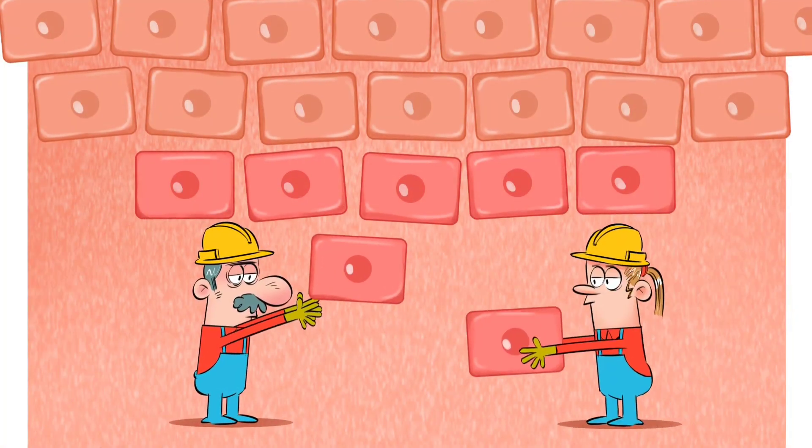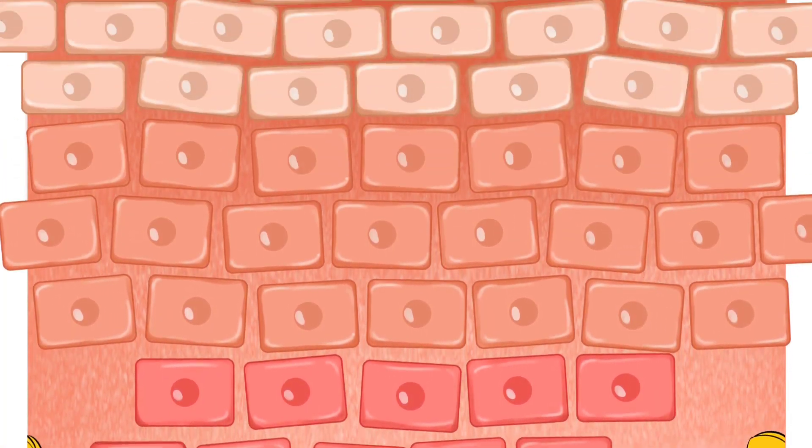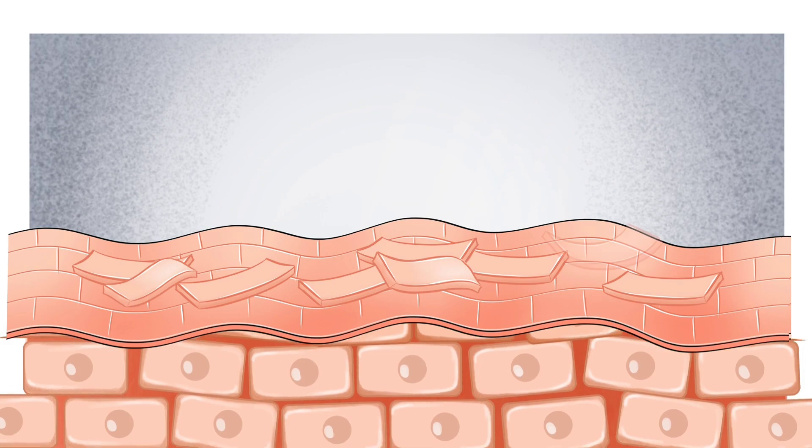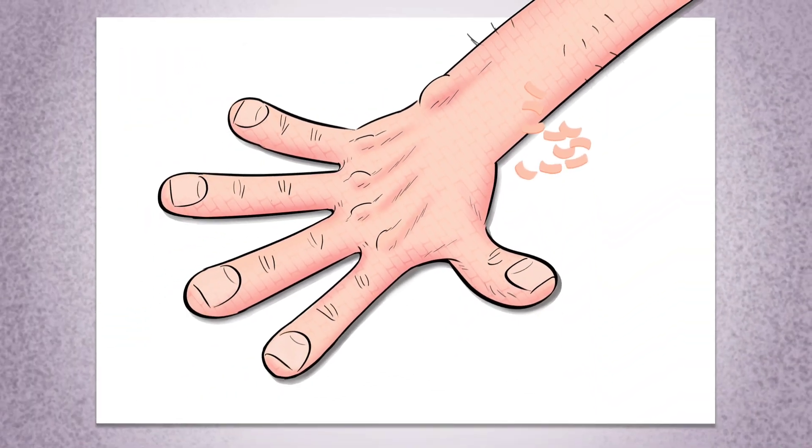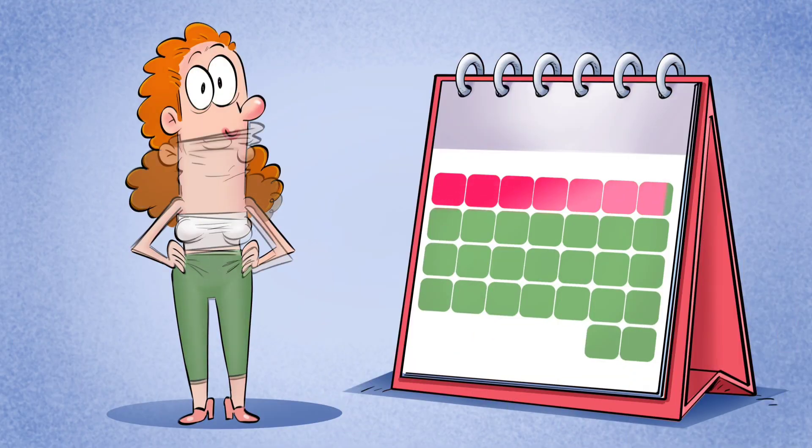Our skin cells are formed in the deepest layer of the skin and move to the outer surface over time. There, the cells die and become scaly. This process usually takes around 3 to 4 weeks.